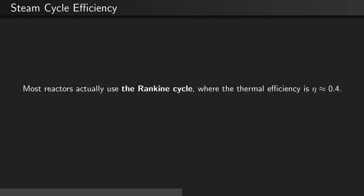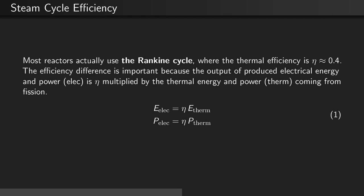Most reactors actually use the Rankine cycle, where the thermal efficiency is higher, approximately 40%. The efficiency difference is important because the output of produced electrical energy and power is eta multiplied by the thermal energy and power coming from fission.